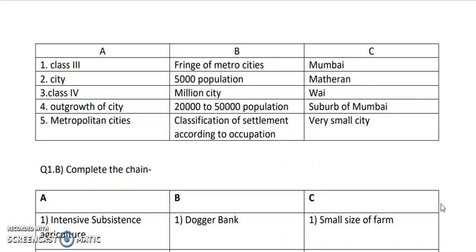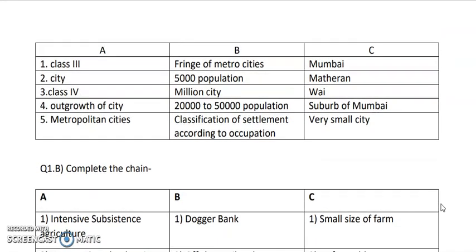Let us move ahead with complete the following chain number three. Again we have three criteria: A, B and C. We have class 3 city, class 4, outgrowth of city, and metropolitan city. Metropolitan cities are very developed with a very high size and high development. Out of cities like Mumbai, Matheran, Wai, suburb of Mumbai, and very small cities, the metropolitan city is none other than Mumbai.